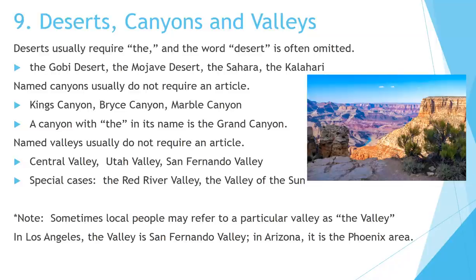Number 9: Deserts, Canyons, and Valleys. Deserts usually require THE and the word DESERT is often omitted. Examples: The Gobi Desert, The Mojave Desert, The Sahara, The Kalahari. Named canyons usually do not require an article: Kings Canyon, Bryce Canyon, Marble Canyon. A notable canyon with THE in its name is the Grand Canyon. Named valleys usually do not require an article — for example: Central Valley, Utah Valley, San Fernando Valley. Special cases: The Red River Valley, The Valley of the Sun. Sometimes local people may refer to a particular valley as THE Valley. In Los Angeles, THE Valley is San Fernando Valley. In Arizona, it is the Phoenix area.